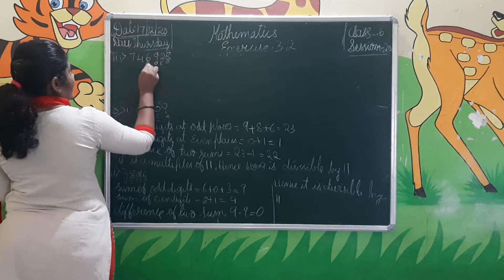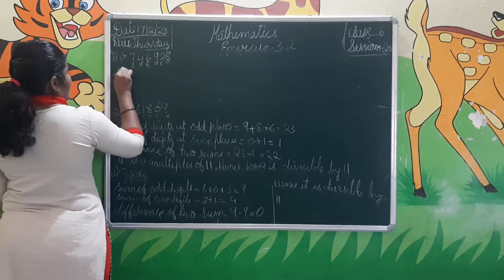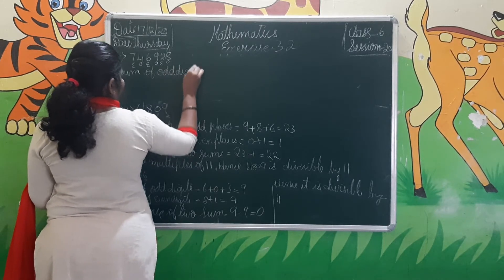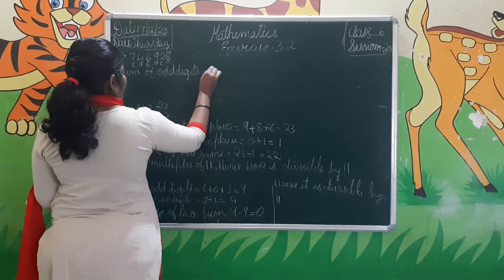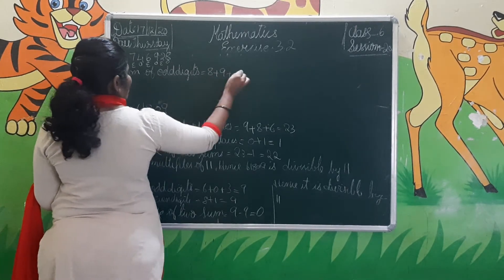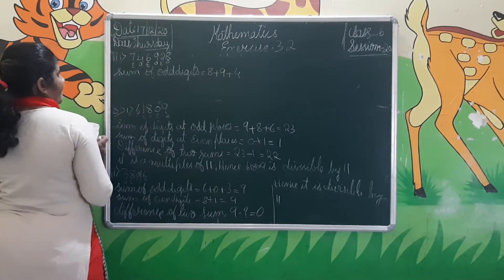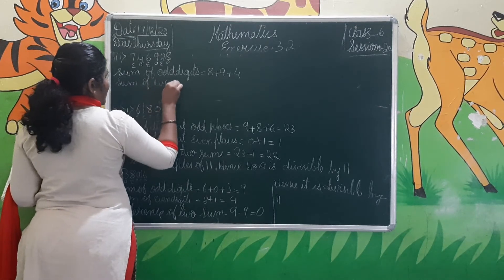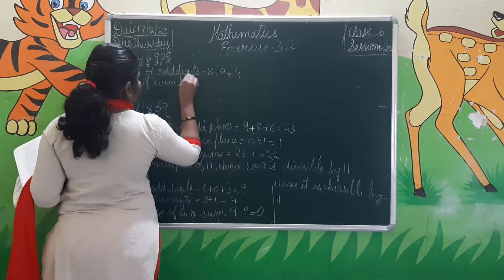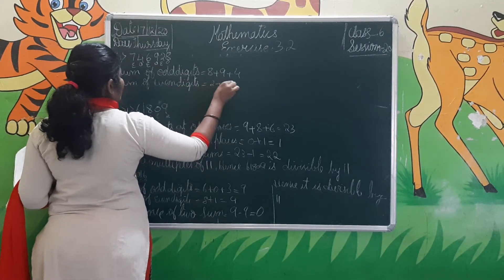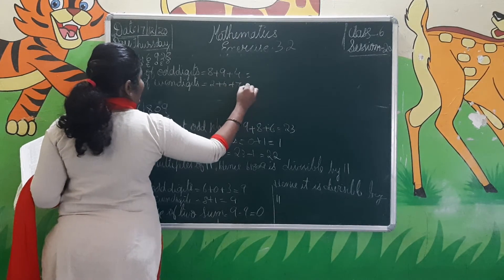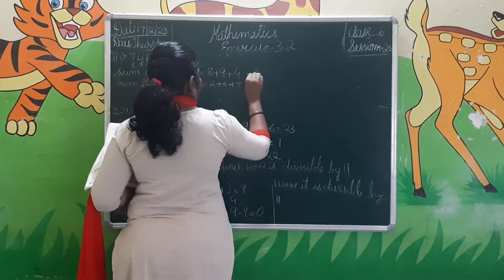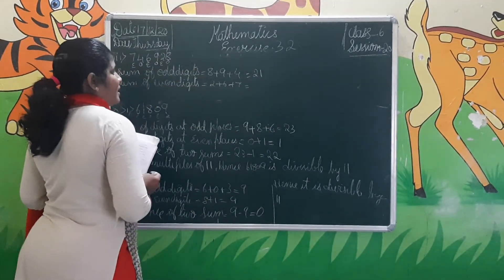For 7,46,928, label positions: odd, even, odd, even, odd, even. Sum of odd-place digits: 8 + 9 + 4 = 21. Sum of even-place digits: 2 + 6 + 7 = 15.